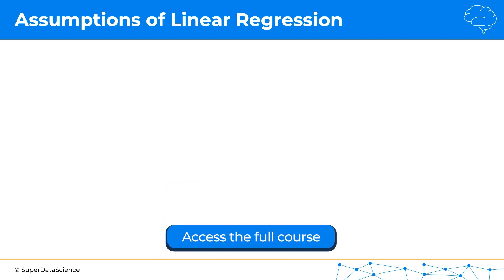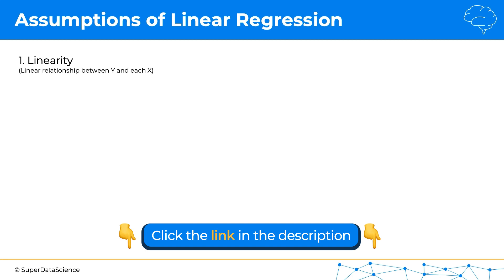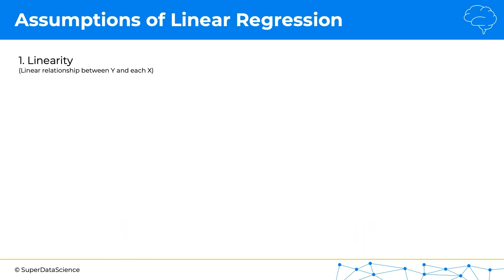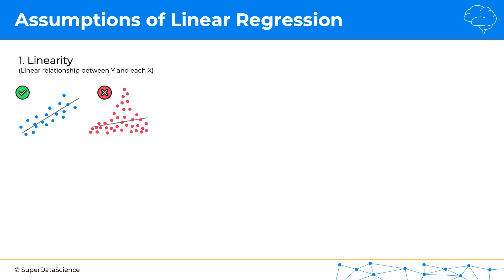There are going to be five assumptions in total plus an extra check. The first assumption is linearity — we want to make sure that there is a linear relationship between our dependent variable and each independent variable. And if you look at the chart here on the right, you'll see that the linear regression is misleading; there is actually no linear relationship between the two variables. So we wouldn't use this kind of model there.